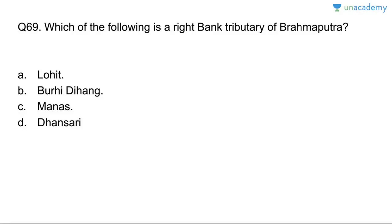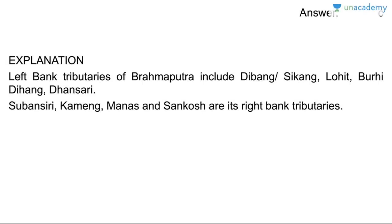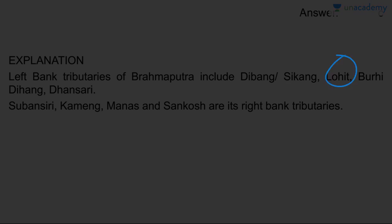Question sixty-nine: which of the following is a right-bank tributary of the Brahmaputra? Manas. Left-bank tributaries include Dibang, Lohit, Burhi Dihing, Dhansiri. Right-bank tributaries include Subansiri, Kameng, Manas, and Sankosh. Answer is Manas.